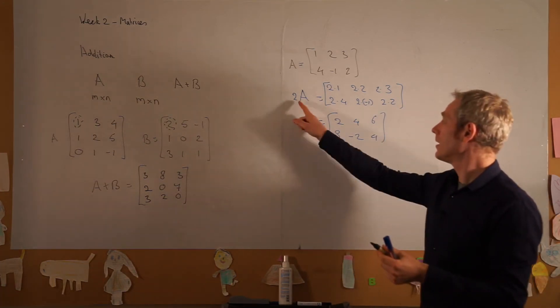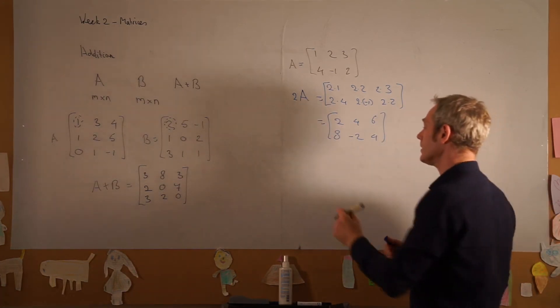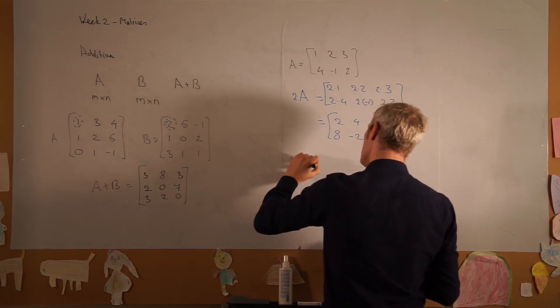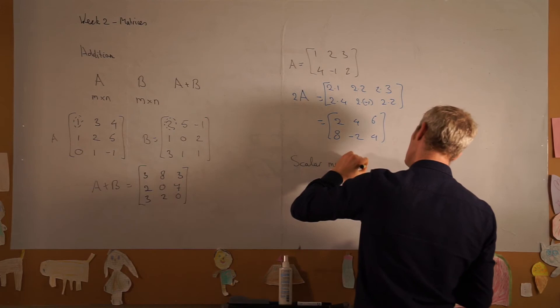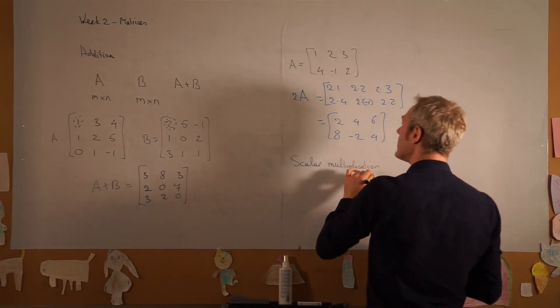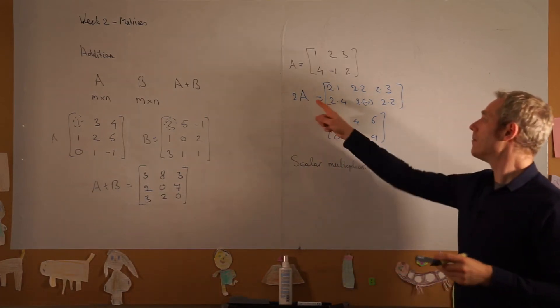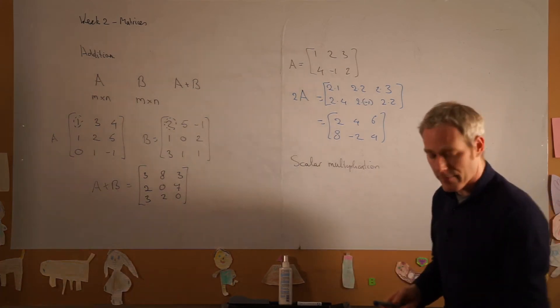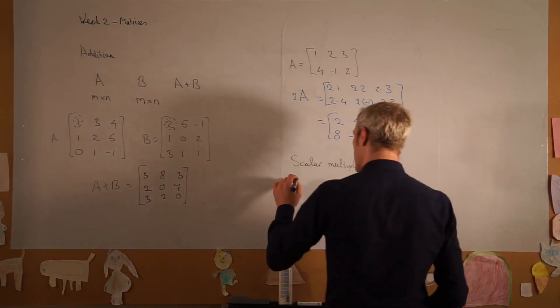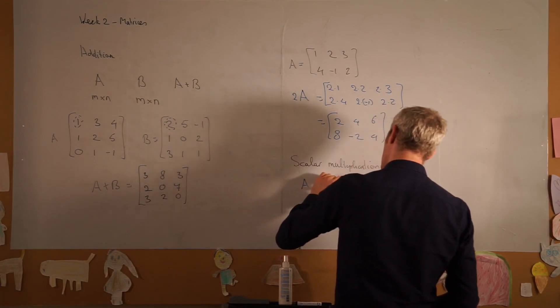So multiplying the matrix by a scalar—so we have scalar multiplication—we just multiply each element by that number. And formally, if we have A is an m by n matrix...